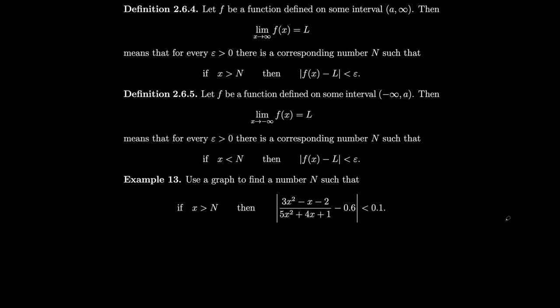Now the formal definition: the limit of f(x) as x goes to infinity equals L means that for every positive epsilon, there is a corresponding number N such that if x > N, then |f(x) - L| < epsilon. No matter how close we want f to be to L, we can achieve it by making x large enough. For limits at minus infinity, we require x < N instead.